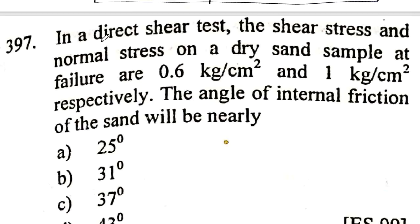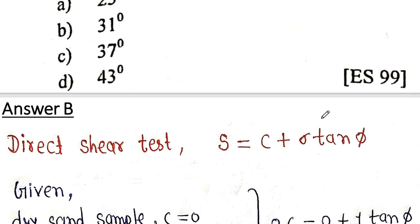Next question: a direct shear test is conducted for determining shear strength properties. The shear stress at failure is 0.6 kg/cm² and normal stress is 1 kg/cm² on a dry sand sample. Find the angle of internal friction. Using Mohr-Coulomb equation: shear stress equals cohesion plus normal stress times tan(φ).